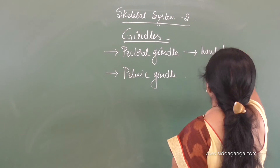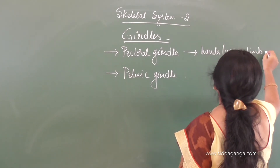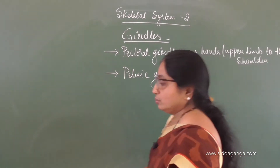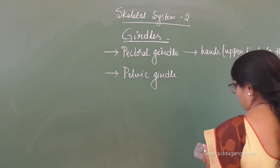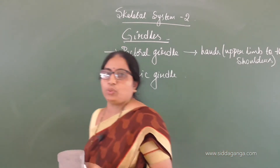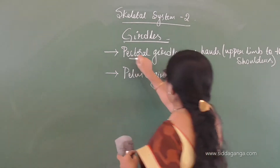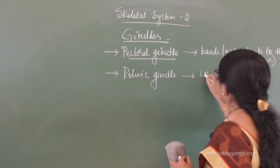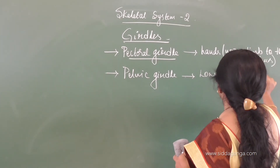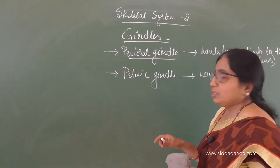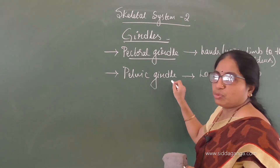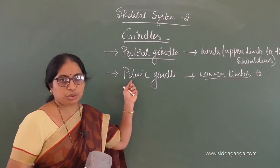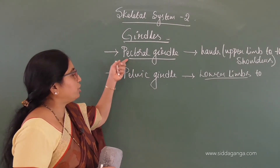The pectoral girdle joins the upper limbs to the shoulders. The shoulder framework is called the pectoral girdle. The pelvic girdle is present in the abdomen where the lower limbs are attached — the lower limbs attach to the pelvic girdle, which in turn is attached to the main axis of the body. So these are the two girdles: the shoulder framework and the abdominal framework.